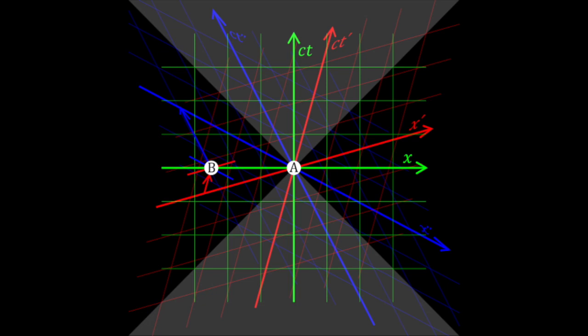However, there are events that may be non-simultaneous in all frames of reference. When one event is within the light cone of another, its causal past or causal future, then observers in all frames of reference show that one event preceded the other.